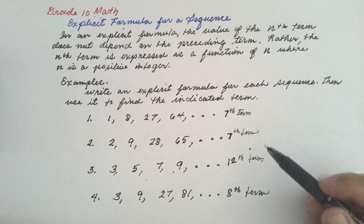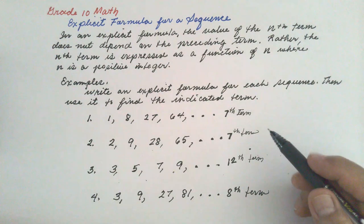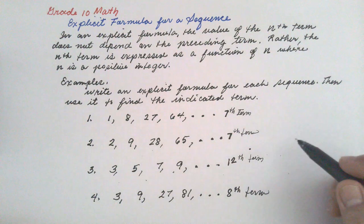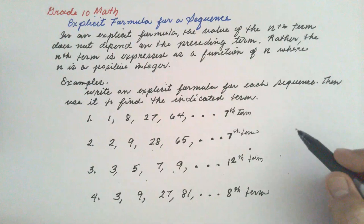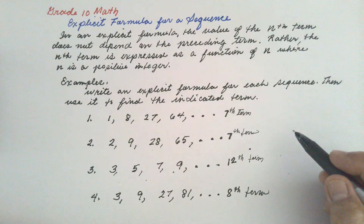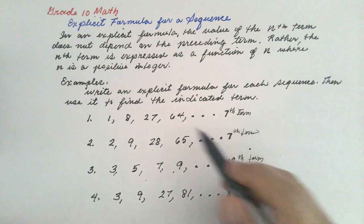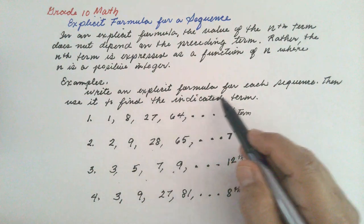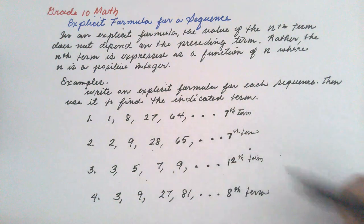Our topic for today is about explicit formulas for sequences. In an explicit formula, the value of the nth term does not depend on the preceding term. Rather, the nth term is expressed as a function of n, where n is a positive integer. We are going to write an explicit formula for each of the following sequences.